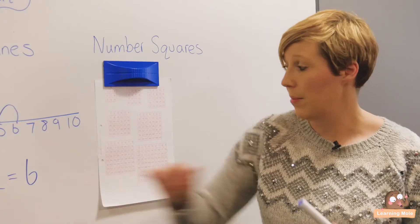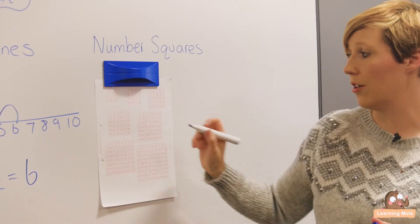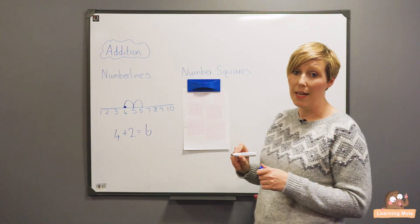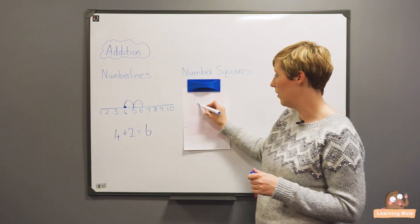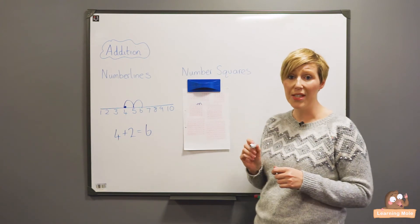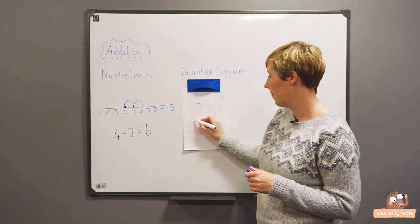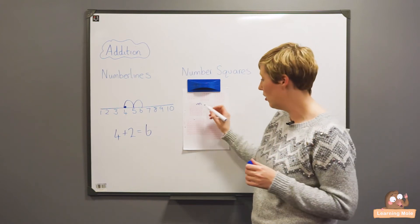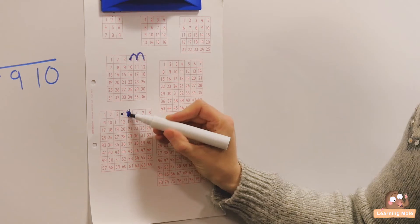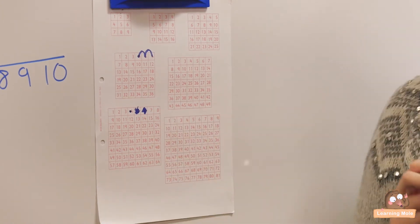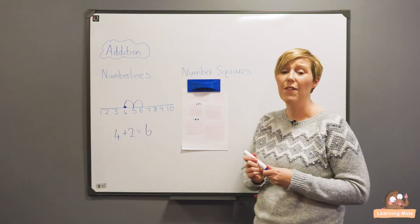They identify the number they want to start on—so I'm going to start on 4 and do 2 jumps: 1, 2, and I'm on 6. It could even be that you start on 4 and color in to show where you land, and I'm landing on 6. So again, very versatile.